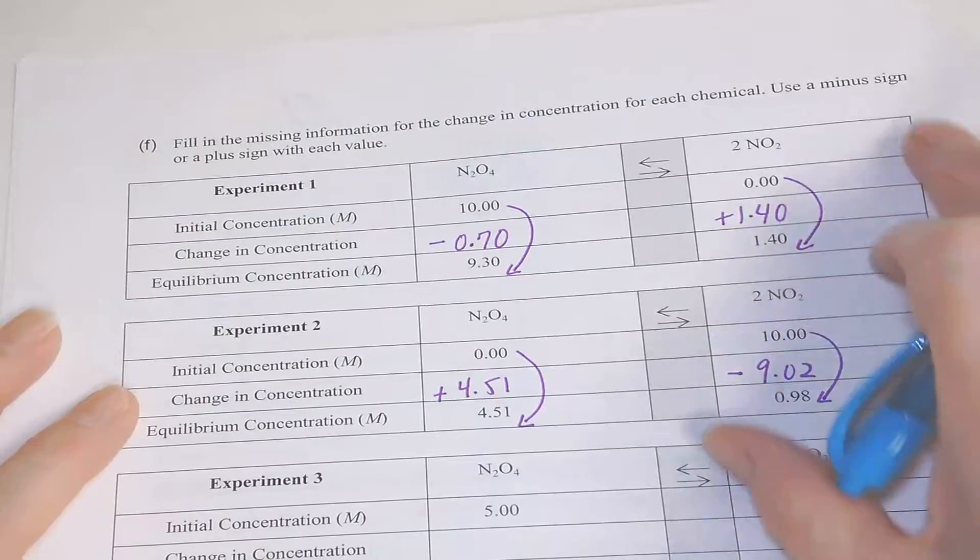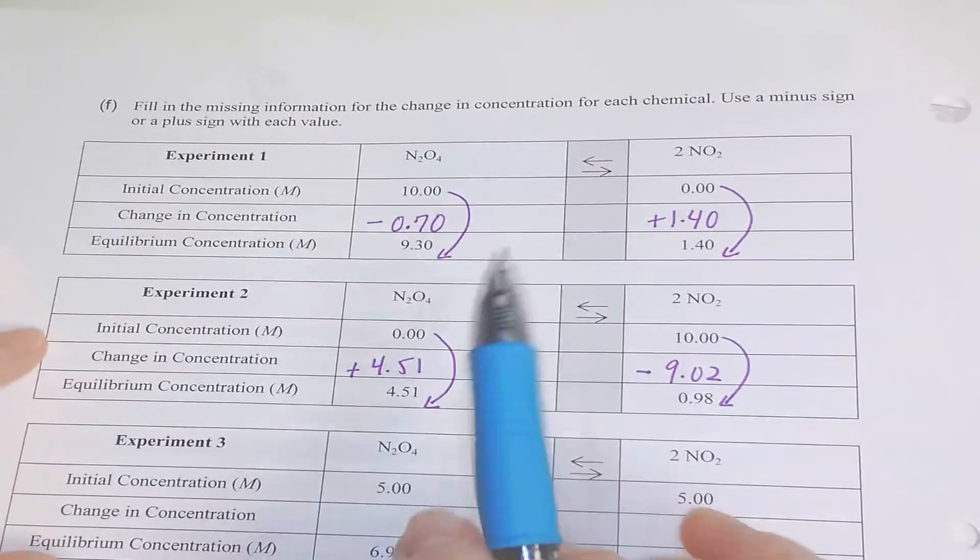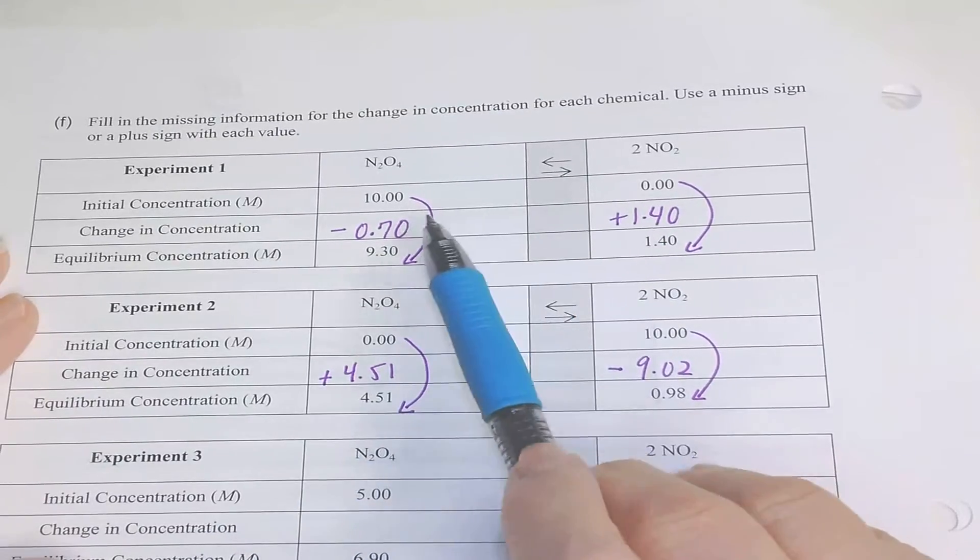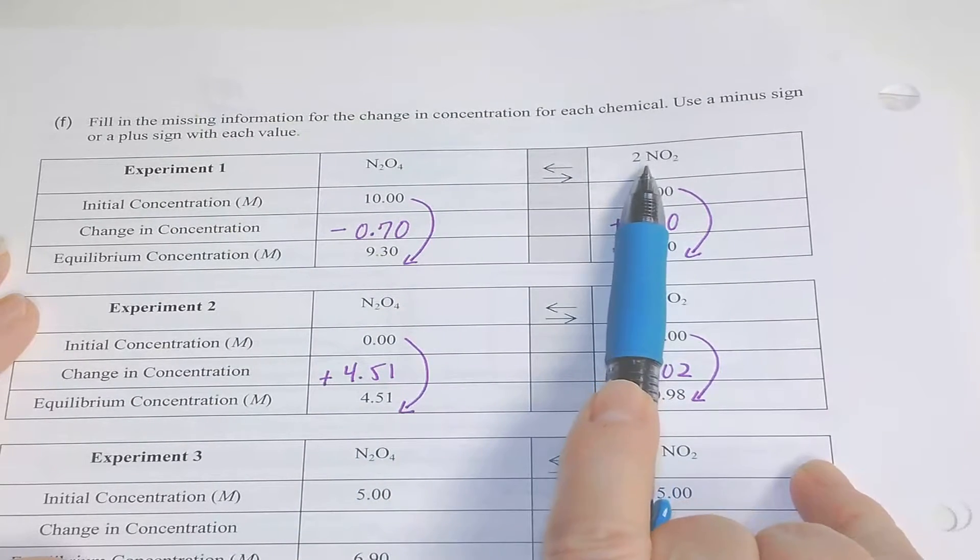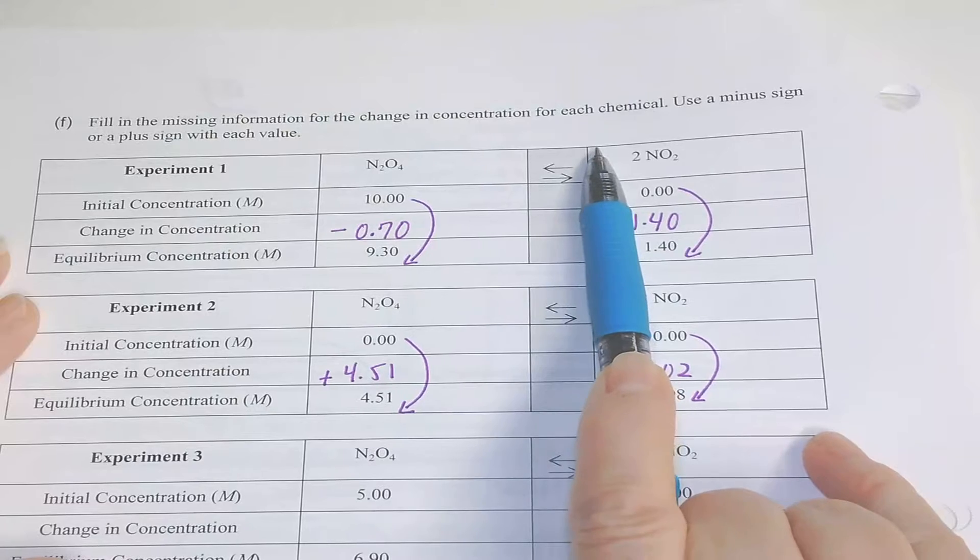On the back, we are now looking at what happens during an equilibrium process. We've got a simple reaction of N2O4 going to 2NO2, equilibrium situation.